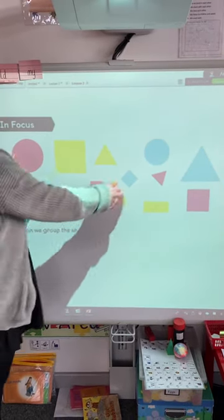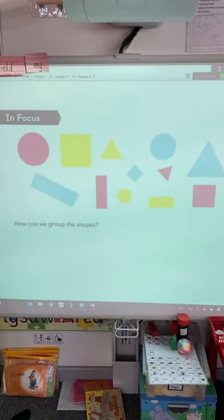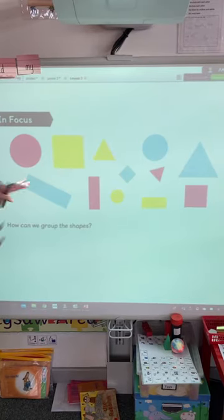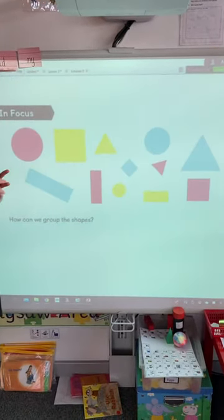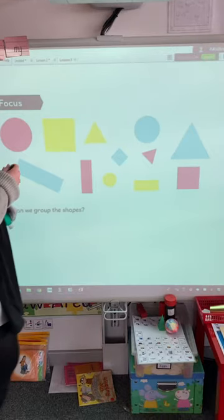Could you put all the circles together? So you group it by shape? Or could you put all of the blue shapes together? So you group it by colours. Have a think of what you could do.